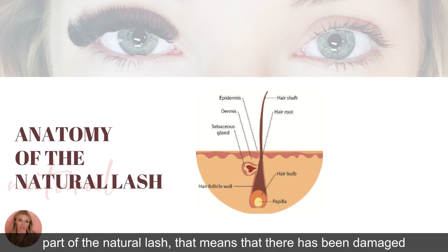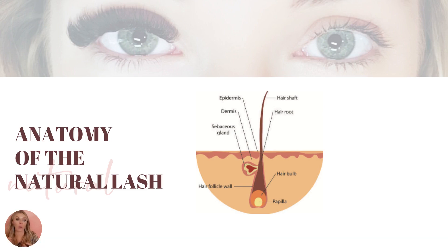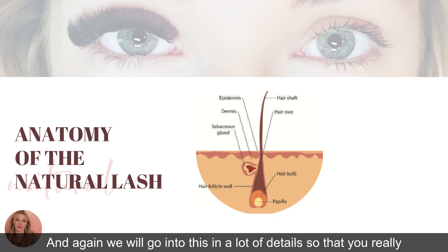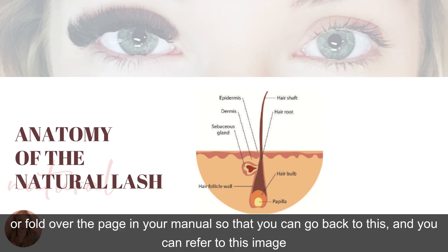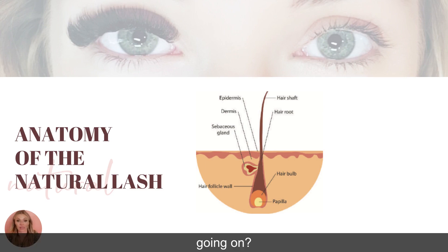If you're looking at a lash and you see a blunt, broken bottom part of the natural lash, that means there has been damage — either through the client pulling, twisting, or grabbing, or because you applied the extensions incorrectly through improper isolation, or used extensions that were too long. We'll go into this in a lot of detail, but what I want you to understand here is just the anatomy, so save this image or fold over the page in your manual and remember the names.